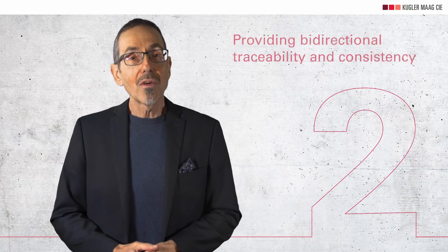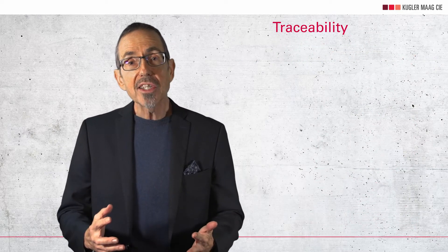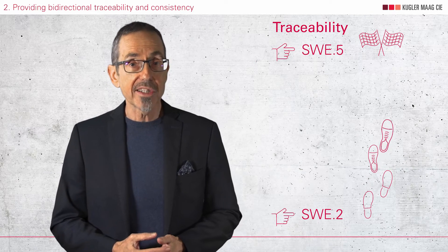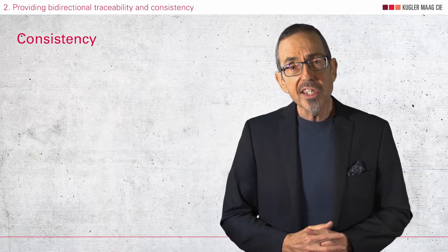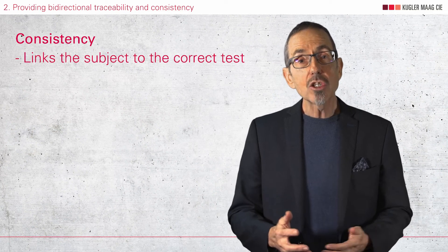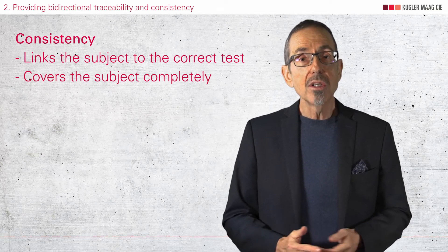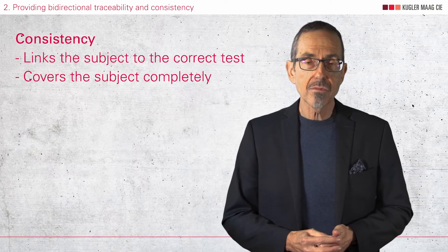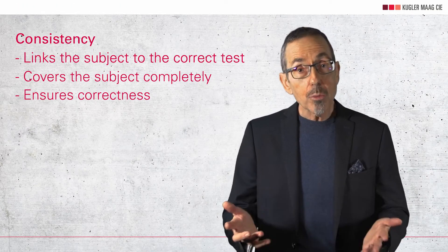Point number two is providing bidirectional traceability and consistency to the software architecture. Traceability means that for each relevant architectural element, such as an interface, you can localize the corresponding test. If you can do this vice versa, then the traceability is bidirectional. Consistency requires that the interface is linked to the correct test — not to the test of something else — and that the test is suitable to test the interface completely. If not, additional tests must be linked. Consistency also requires that the tests actually test the interface correctly — in other words, no faulty tests.